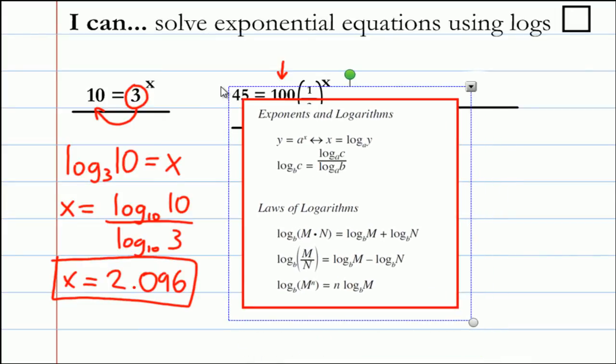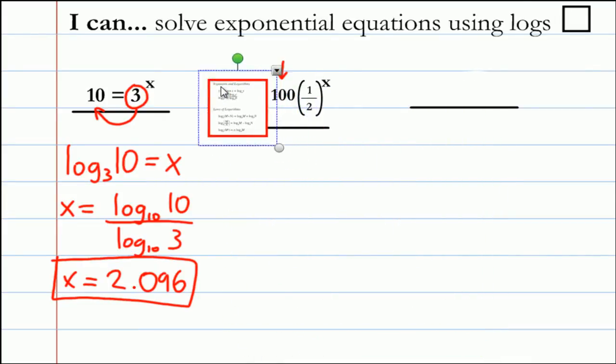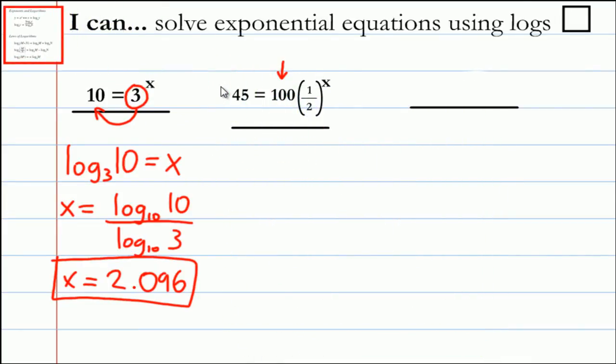We first need to get rid of this 100. If we divide both sides by 100, we get 4.5 equals one half to the x. 100 divided by 100, that one disappeared.